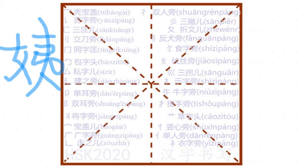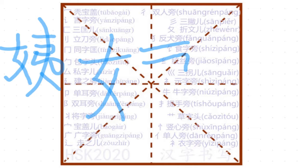女字旁. Because it is a left-right structure, make the left a little bit smaller. 儀, 女字旁, 右邊 — the right-hand side is called 儀. It's a bit tricky to write this character.